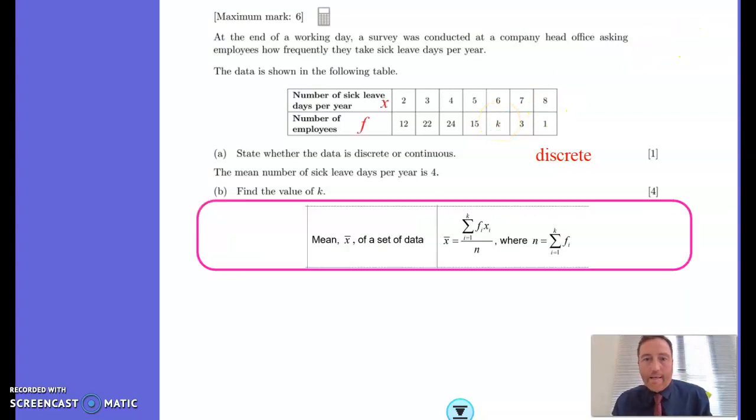Let's see what the formula book tells us about this. So if you have forgotten, or it's not sort of something that comes to you quickly, the mean of a set of data, and this is for a frequency table, it's the sum of the frequencies times the values divided by n. And n is the sum of all the frequencies. So it's frequencies times values, add them all together, divided by the total frequency.